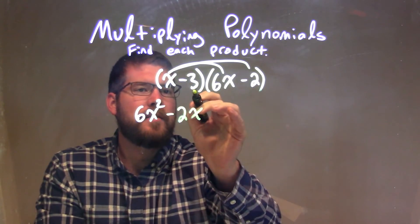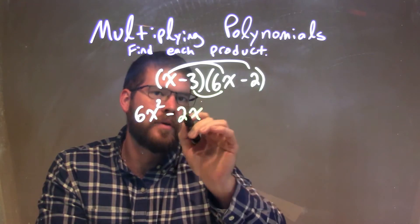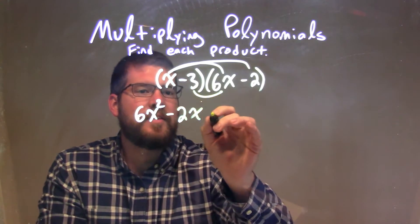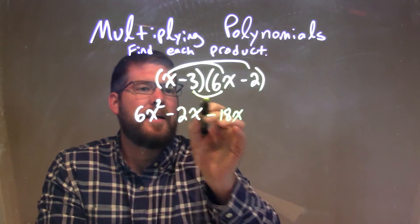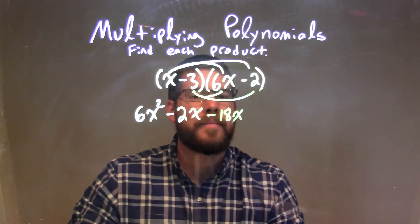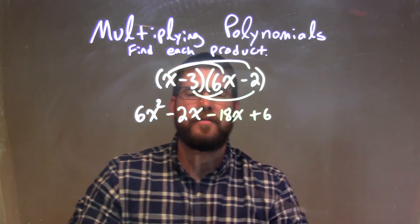Negative 3 times 6, and the minus sign brings over that negative 3, times 6x is a negative 18x. And minus 3 times a minus 2 is a positive 6.